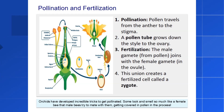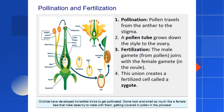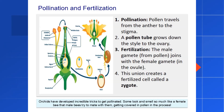Speaking of pollination, some plants are master tricksters. The bee orchid, for example, has a flower that perfectly mimics the look and scent of a female bee. Male bees are fooled into trying to mate with the flower and end up getting pollen all over them, which they then carry to the next orchid they visit. Clever, isn't it?